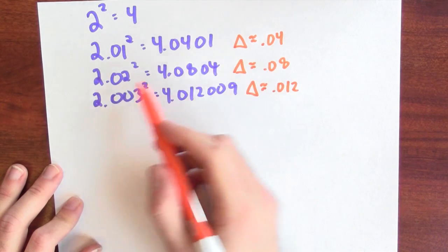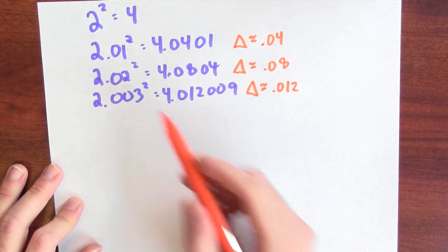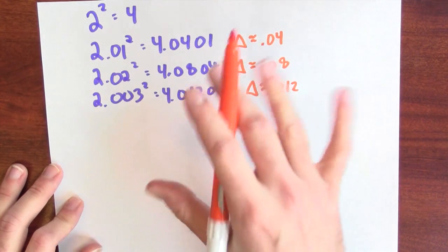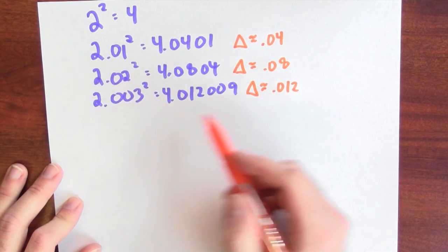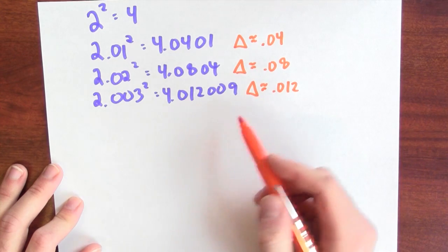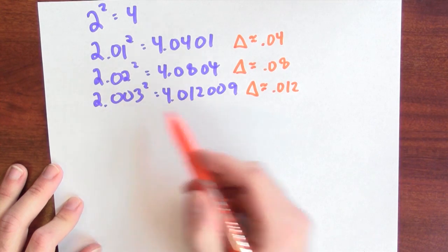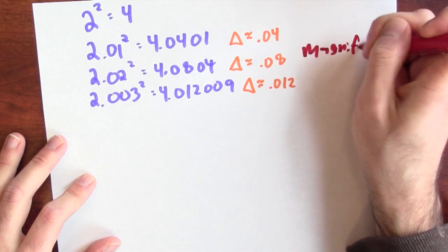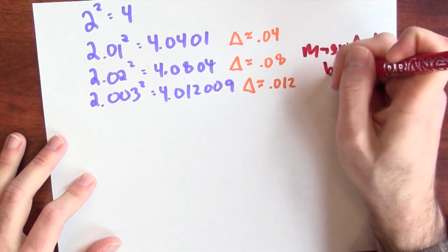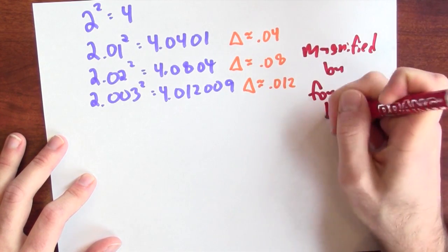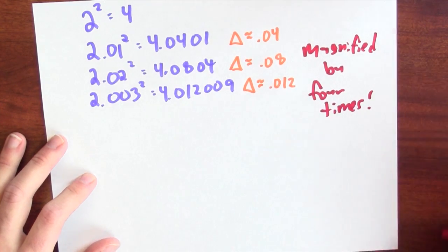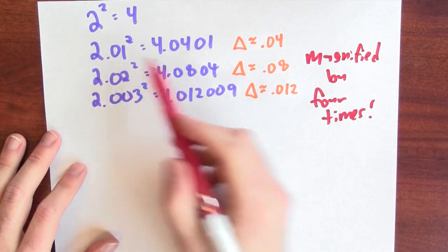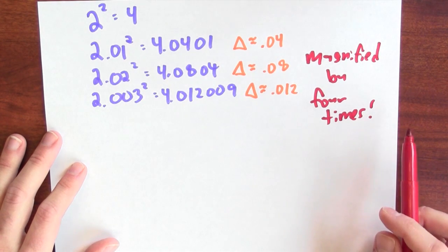Now look at the relationship between the input change and the output change. The input changed by 0.01, the output changed by about 4 times as much. The input changed by 0.02, the output changed by about 4 times as much. The input changed by 0.003, the output changed by about 4 times as much. The output change is the input change magnified by 4 times.